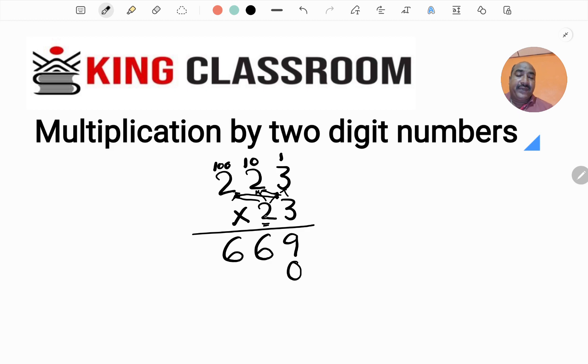Two 3's are 6, two 2's are 4, and two 2's in the 100's place are 4. So the result is 4460, starting from 10's place.